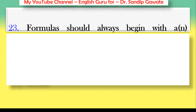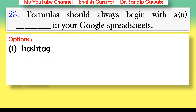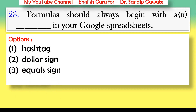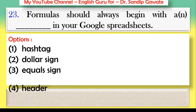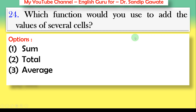Question 23: A formula should always begin with which symbol in your Google Spreadsheets? Options: hashtag (#), dollar sign ($), equals sign (=), or header. The correct answer is option number three — the equals sign (=).